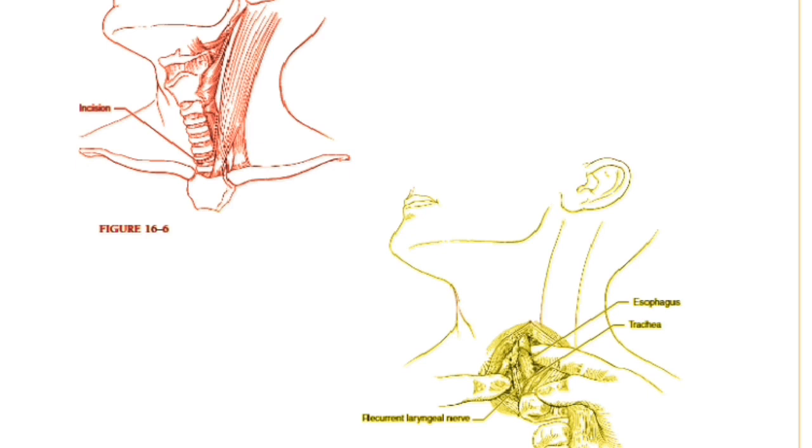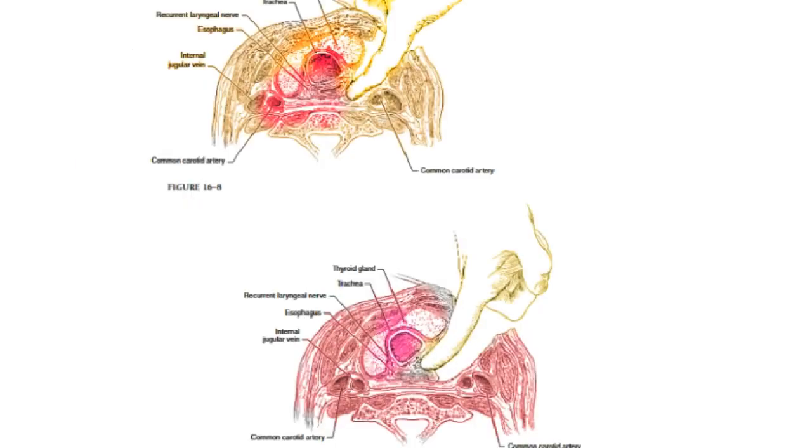Figure 16-7. The cervical esophagus is mobilized by blunt dissection beginning in the prevertebral space and working medially. The tracheoesophageal groove is opened with blunt dissection that is continued medially to connect with the prevertebral dissection. Figures 16-8 and 16-9.